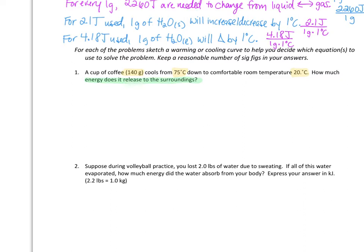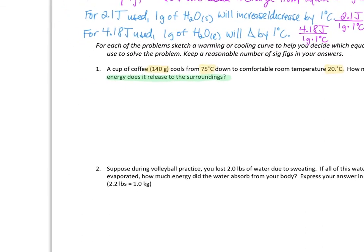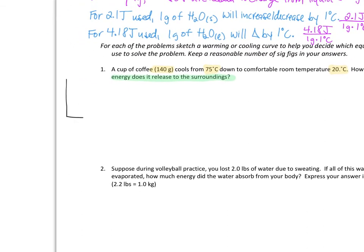Before we do anything mathematically, we want to start by sketching a temperature versus time graph, which is a warming or a cooling curve, to help us decide what we're going to do. So we're going to say this is 75 degrees, this is 20 degrees, and we're going to decrease our temperature. Water at 75 and at 20 degrees Celsius is going to be a liquid. We don't have any change in phase, so that's going to tell us we're looking at thermal energy, and we're going to want our heat capacity of liquid water.